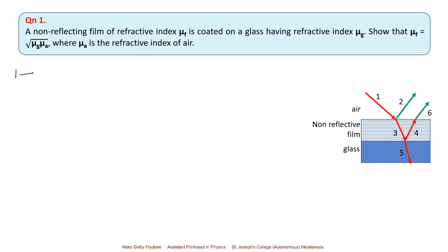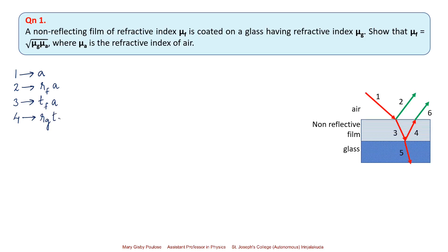Let the first ray be represented as A, where A is the amplitude of the incident light ray. The second ray is the reflected component of the first ray, represented using the reflection coefficient on the film: RF times A. The third ray can be represented as TF times A, using the transmission coefficient on the film. The fourth ray can be represented as the reflection coefficient on the glass surface acting upon the third ray: RG times TF times A.